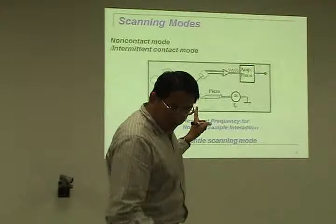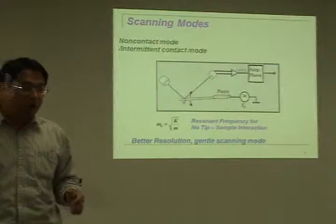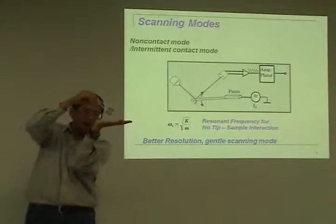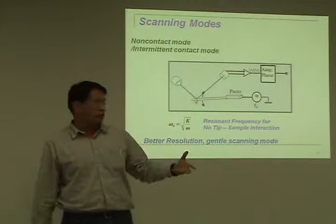Later on, a mode called non-contact mode was developed. In non-contact mode, we oscillate the cantilever very fast at its resonant frequency. During scanning it slightly contacts the surface but does not strongly press on it to measure the surface corrugation. This gives better resolution and gentler treatment of the surface — a gentle scanning mode.